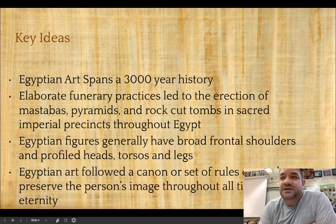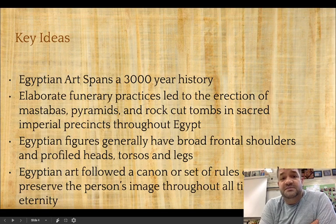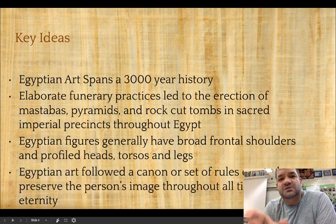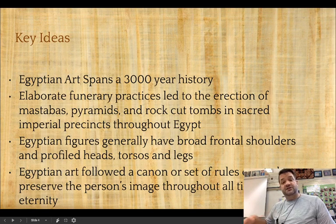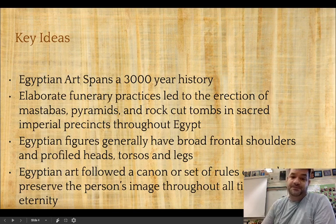Something else you need to know is that, like the Mesopotamians, the ancient Egyptians are going to depict people in a very standard way that is the most recognizable representation of a human. Your torso is going to be full front, the legs are in profile, the head is in profile, but the eye is shown from the front even though it's on the side of the head.